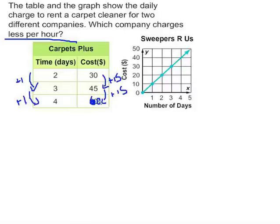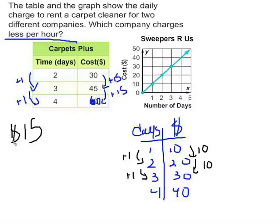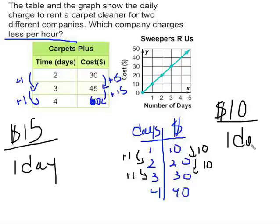So then we go to Sweepers R Us. And we're gonna be looking at days versus cost. I know 1 day costs $10. 2 days costs $20. 3 days costs $30. And 4 days costs $40. I can stop there. I know that for every 1 day that goes by here, I increase by $10. So my constant rate of change for Carpets Plus is $15 per 1 day. And for Sweepers R Us, it's $10 per 1 day. So the company that charges less per hour is Sweepers R Us.